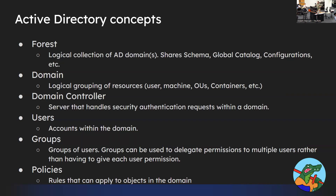You can have groups of domains — for example, a company might have a US branch and a Europe branch as two separate domains in the same forest. Users are just users, groups are groups of users, and policies are rules applied to users — like when they can log in, how long their password has to be, or whether they're allowed to install stuff on the computer. A domain is a group of all these things, which we just call objects — users, machines. An OU is an organizational unit, which is basically a group.